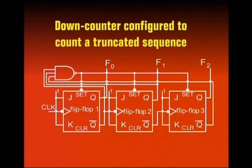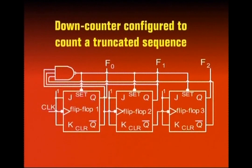The Q-bar outputs of the relevant flip-flops are connected to the NAND gate inputs. The NAND gate's output is connected to the preset signal, which is an active-low asynchronous signal. Basically, the initial count is set to 1,1,1. With each clock pulse, the count goes down: from 1,1,1 it goes to 1,1,0, then next clock pulse to 1,0,1, and so on down to a certain count.